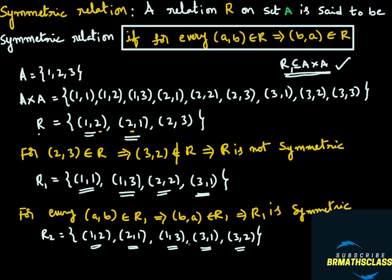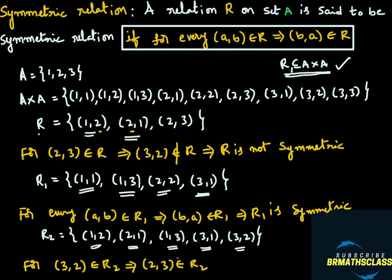Check it — ordered pair (2,3) is not there. So the condition fails here. We say that this relation R2 is not symmetric. How to write this: ordered pair (3,2) is there in the relation, but ordered pair (2,3) is not there in the relation. So we say that R2 is not symmetric. R2 is not a symmetric relation.